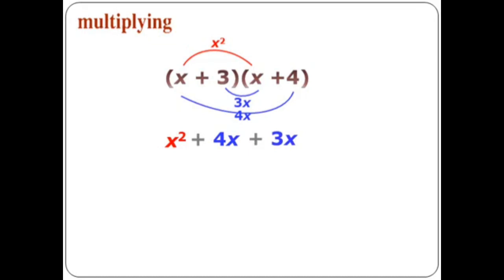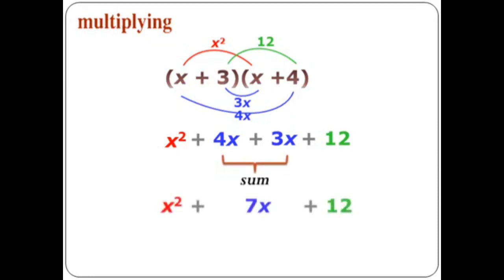Then three goes to four and multiplies with it, so three times four equals 12 — positive times positive gives positive 12. Now I found four x and three x in the middle, so I add them: four x plus three x gives seven x. The result is x squared plus seven x plus twelve.